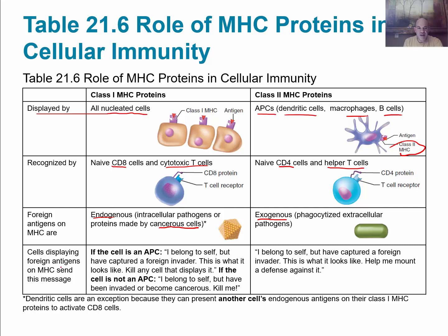Now we're going to look at the cells displaying these foreign antigens on the MHC and the message that they send. With regards to class 1 MHC, if the cell is an antigen-presenting cell, it's going to be signaling: 'I belong to self, but have captured a foreign invader — kill any cell that displays it.' If the cell is not an APC, then it's signaling: 'I belong to self, but have been invaded or have become cancerous — kill me.' For class 2, the signal being sent is: 'I belong to self, but have captured a foreign invader — help me mount a defense against it.'